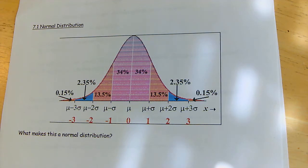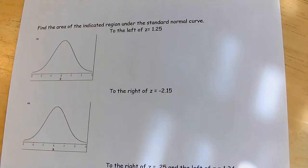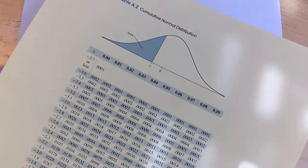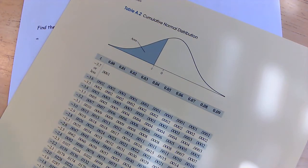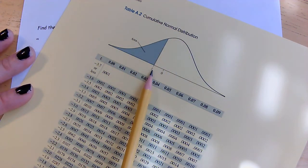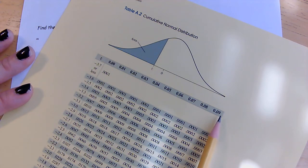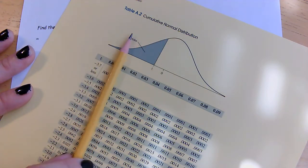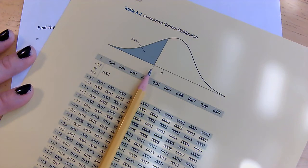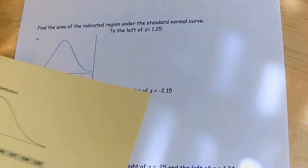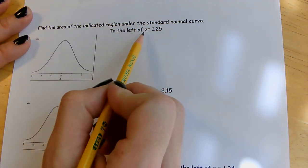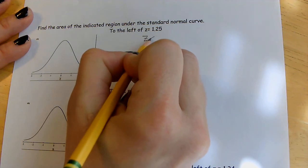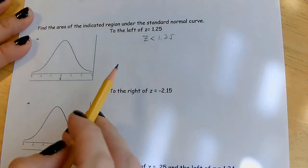In section 7.1 we're reading the normal distribution using a table, though technology can also be used. The z-table has z-values going out to two decimal places, and the table reads by giving you the area to the left of whatever z-value you look up. There are four different ways to read the table. To the left of a z-value means less than or to the left, so you go directly to that z.